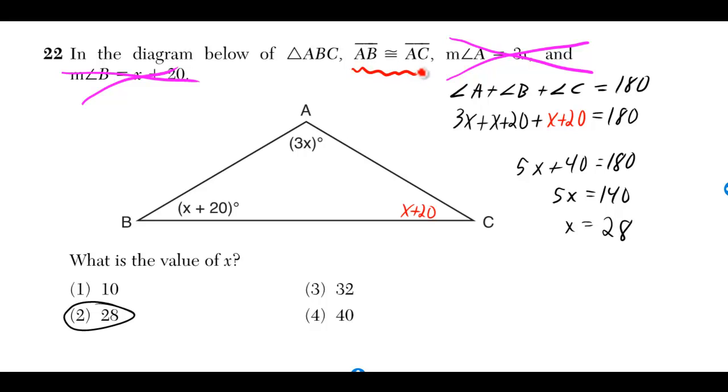But AB being equal to AC, that wasn't marked in the diagram, so we'll mark it. So we have an isosceles triangle.